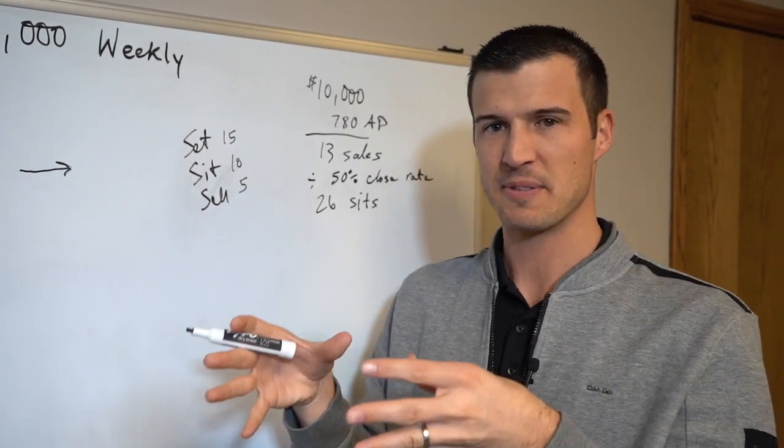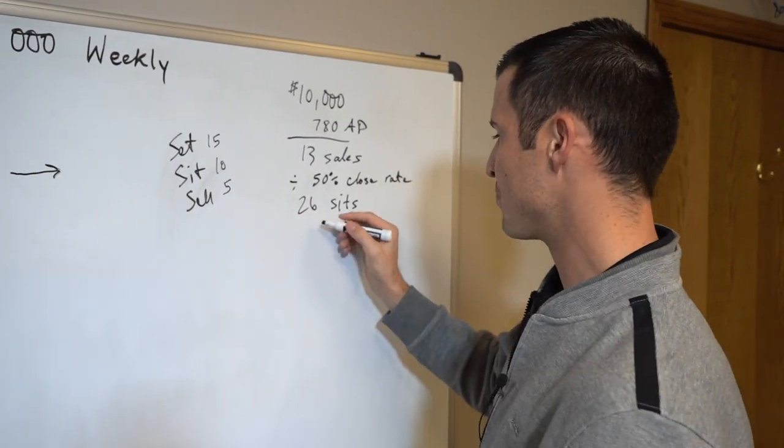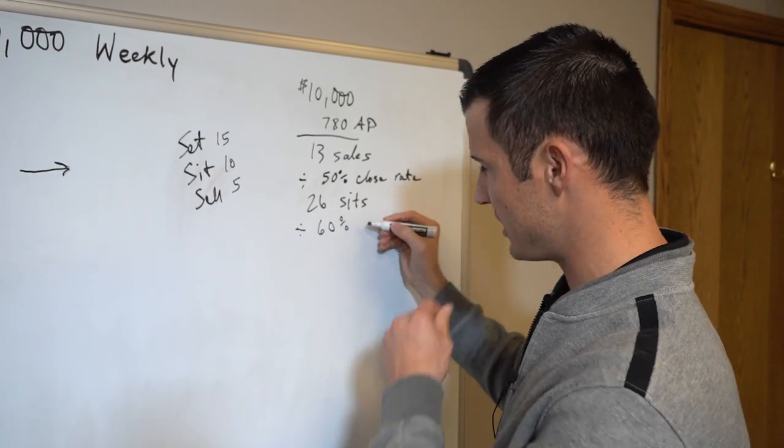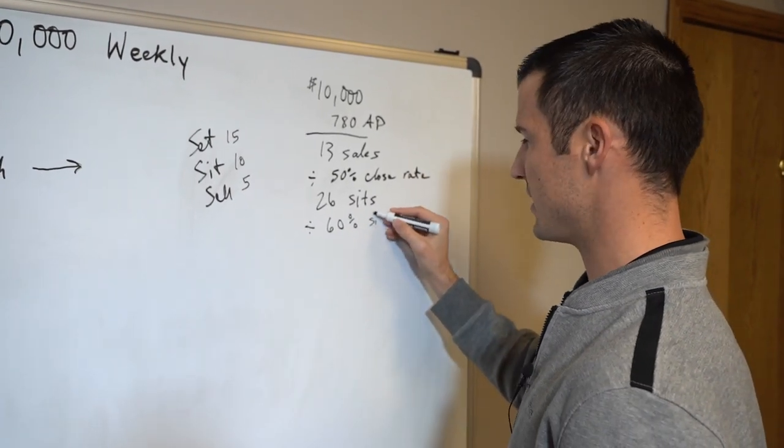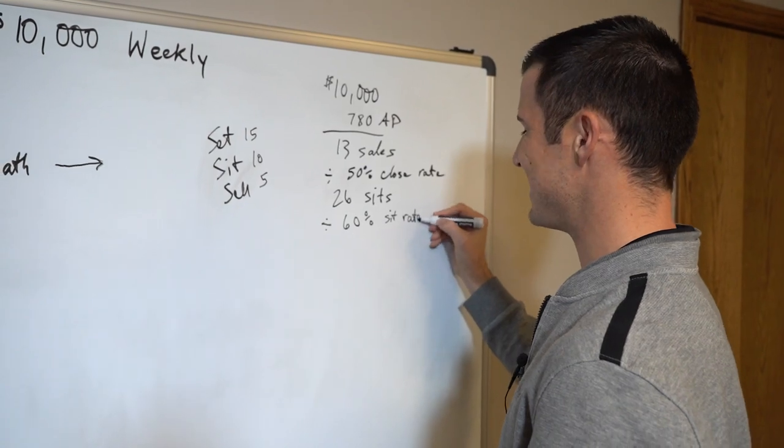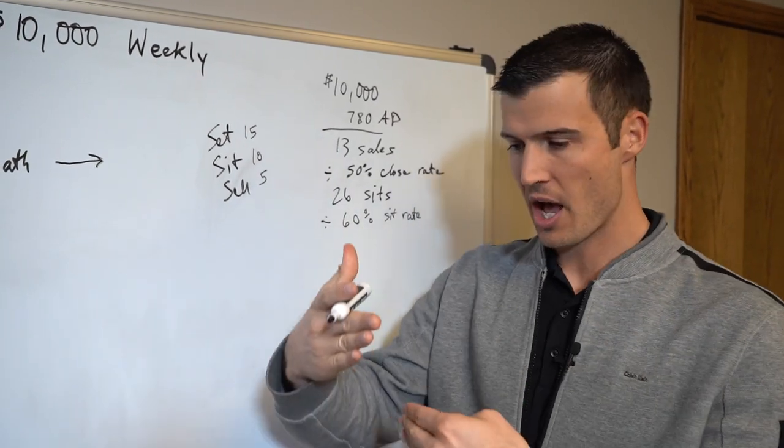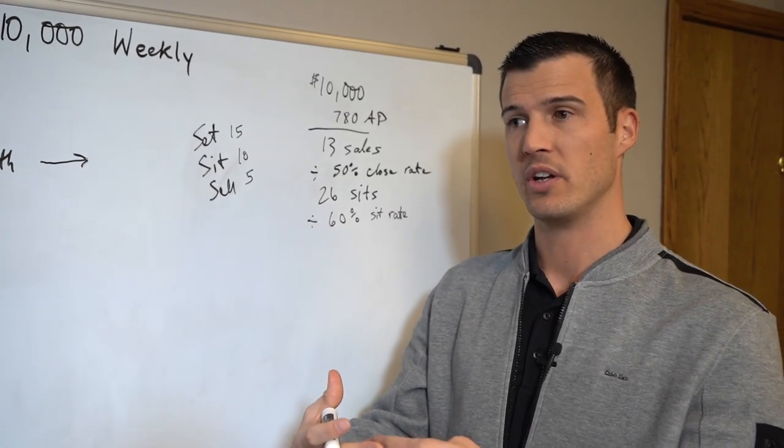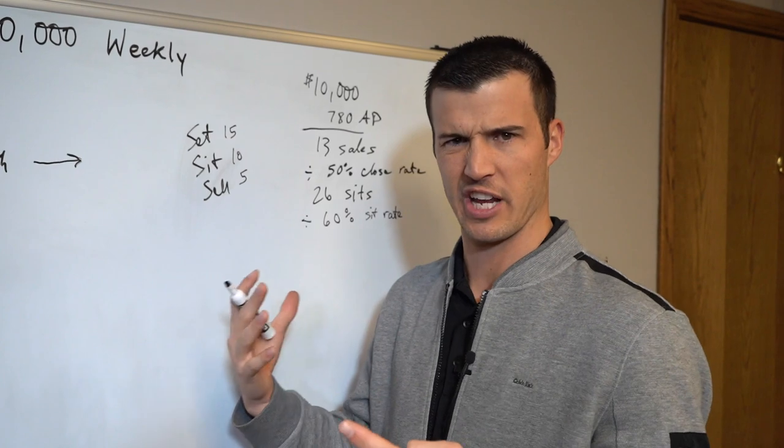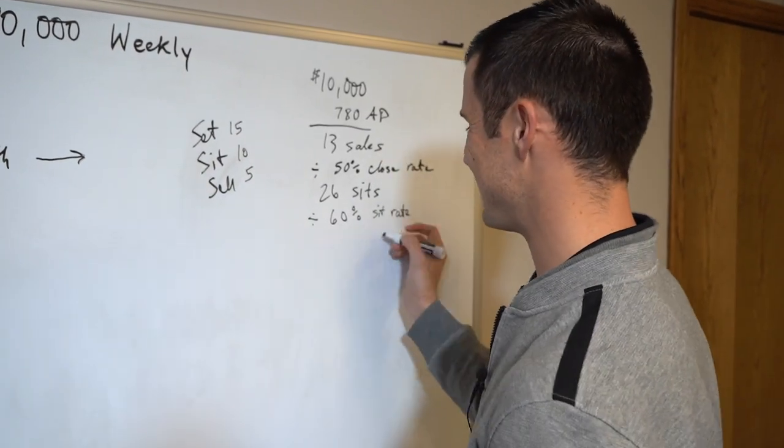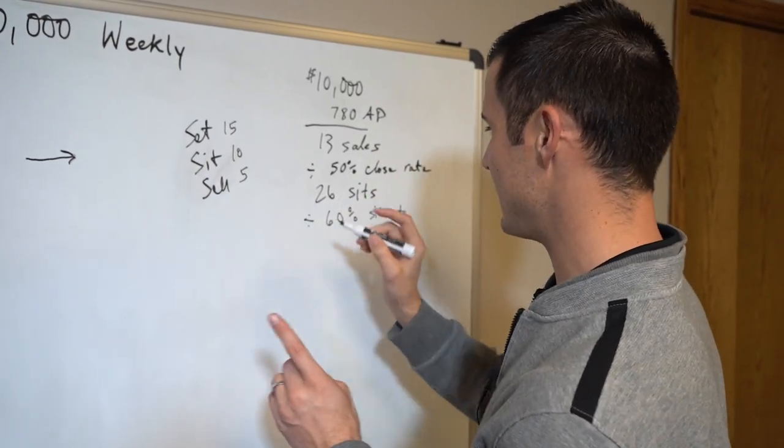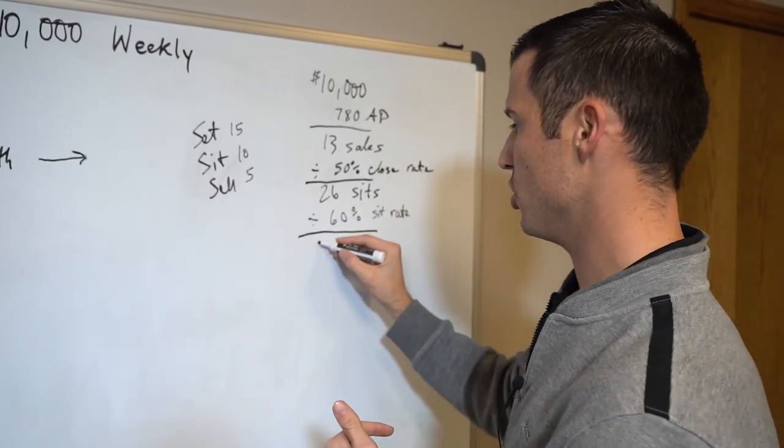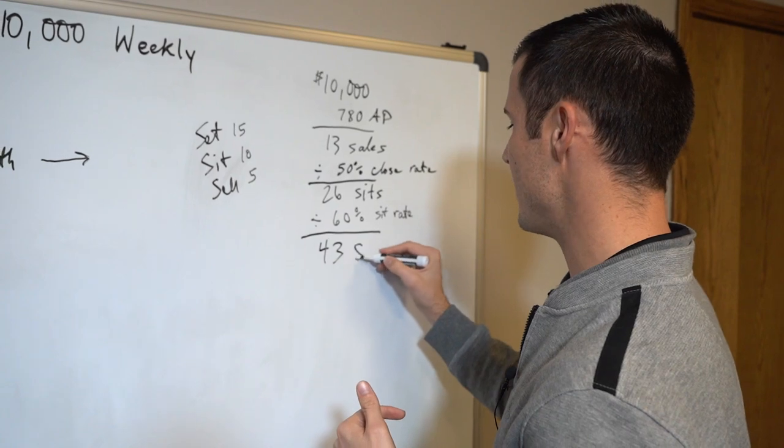26 sits. So if you need to sit down and ask 26 people to buy every single week, now let's just say that you divide it by a 60% sit rate, which means if you set ten appointments about six would actually show up. Some would no-show or stand you up or forget. So when you divide by 60%, that takes you to 43 set appointments per week.